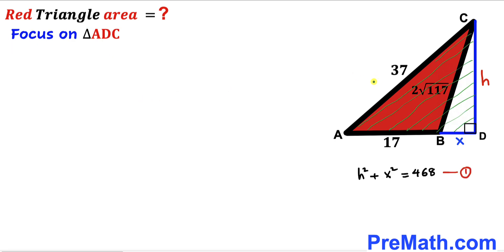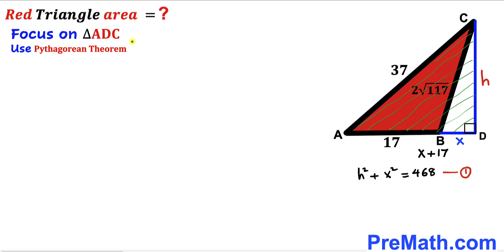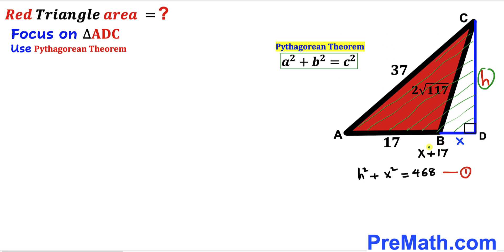Now let's focus on the whole triangle ADC. We can see that triangle ADC is a right triangle. The whole side length AD is going to be the sum of x plus 17. So side AD equals x + 17. We are going to apply the Pythagorean theorem on this triangle as well: a² + b² = c². The hypotenuse of triangle ADC is 37, and the two other legs are h and (x + 17).